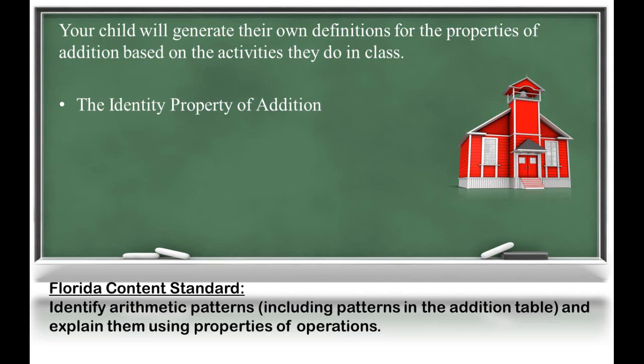The next property of addition that your child will discover is the identity property. With the identity property, it shows me that 23 plus 0 is equal to 23.